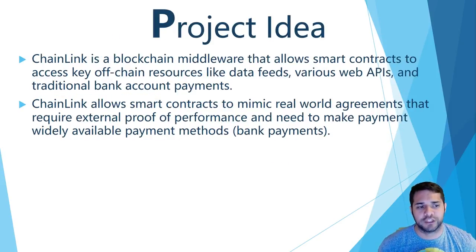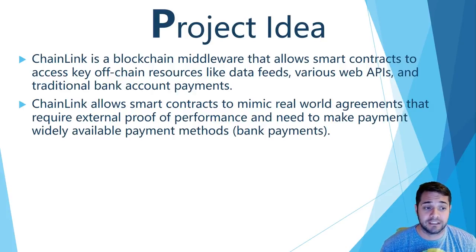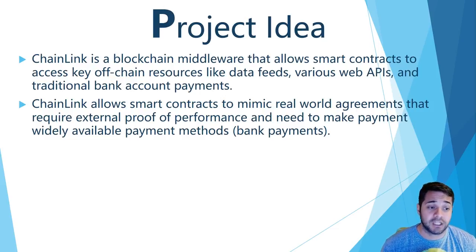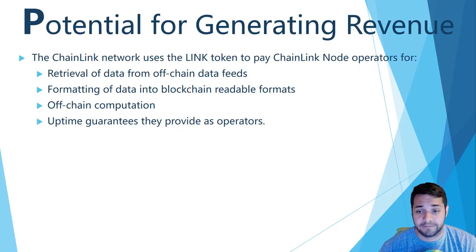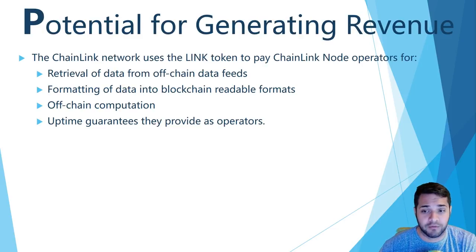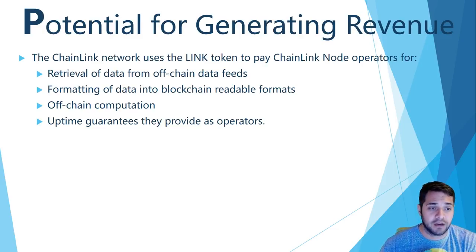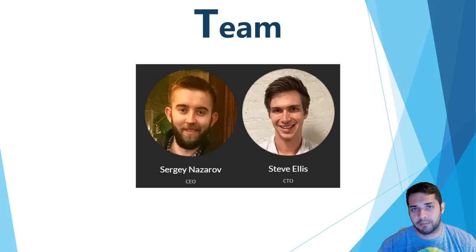So what's the project idea? Chainlink is a secure and fully decentralized Oracle network. The Chainlink network is a decentralized network of Chainlink nodes which sell the usage of specific data feeds, APIs, and various off-chain payment capability directly to a smart contract. As for Chainlink's potential for generating revenue, the LINK token is used to pay Chainlink node operators for several different services: retrieval of data from off-chain data feeds, formatting of data into blockchain-readable formats, off-chain computation, and guaranteeing uptime.